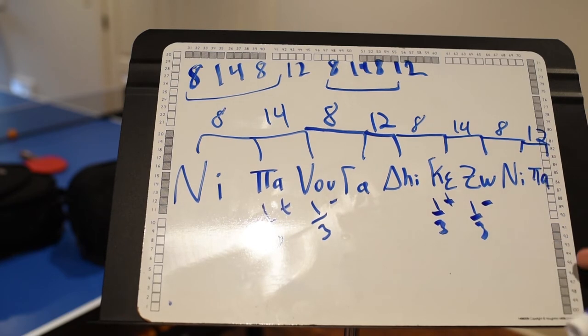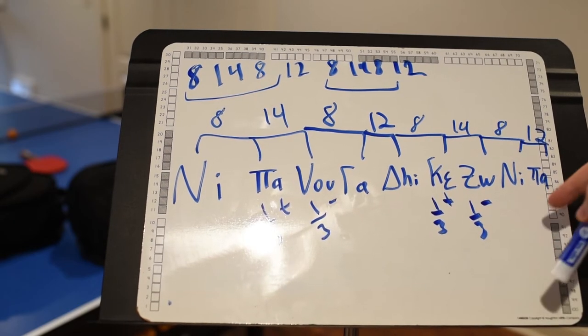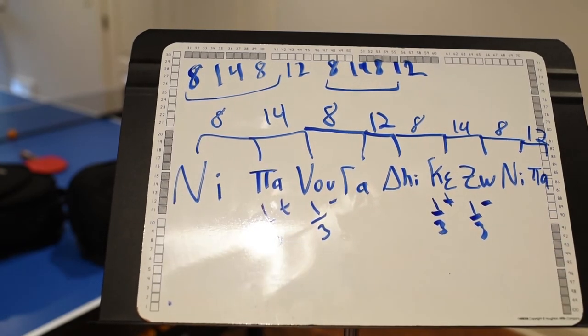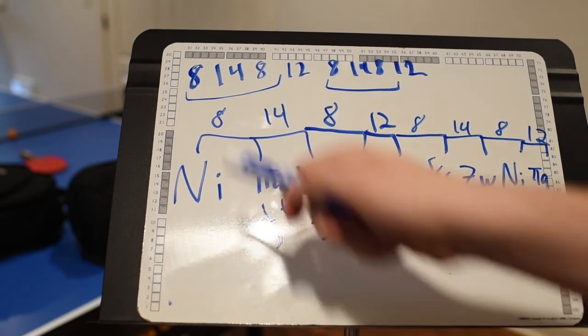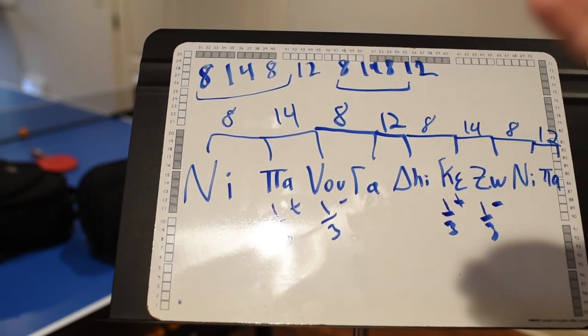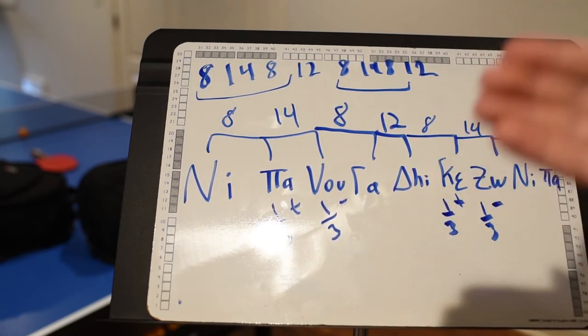And then repeat. Why? Because this is 12, a whole step, and then you repeat 8, 14, 8. Same here. You repeat the 8, 14, 8 again.